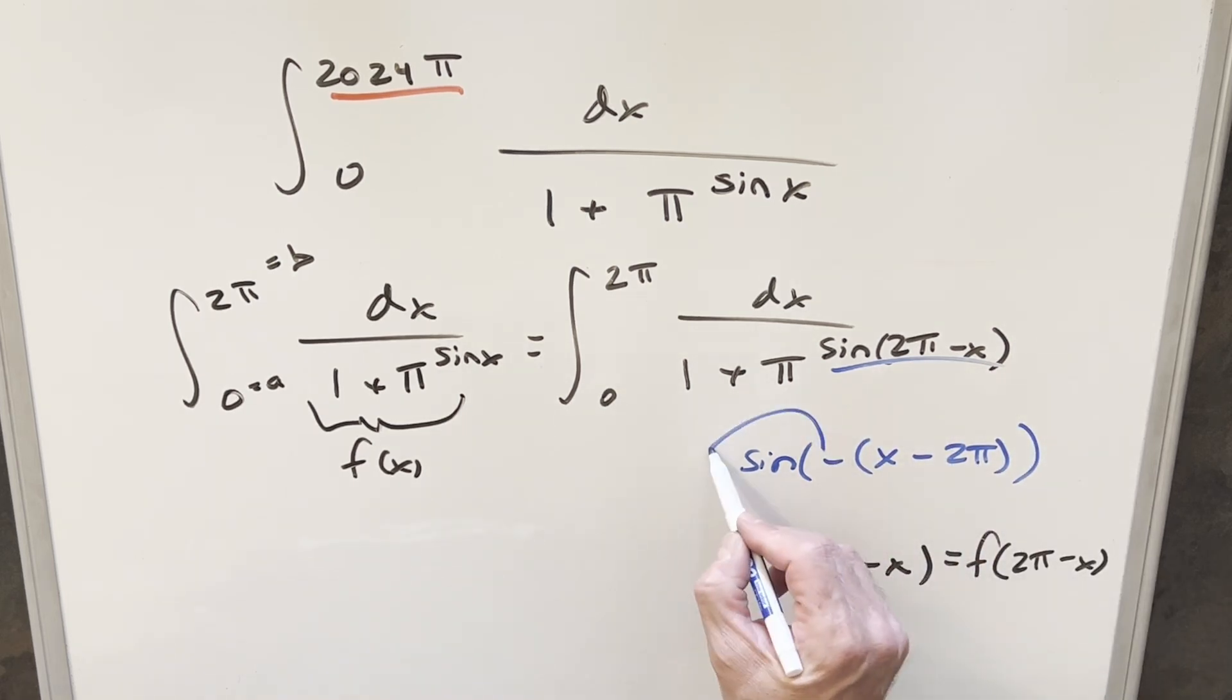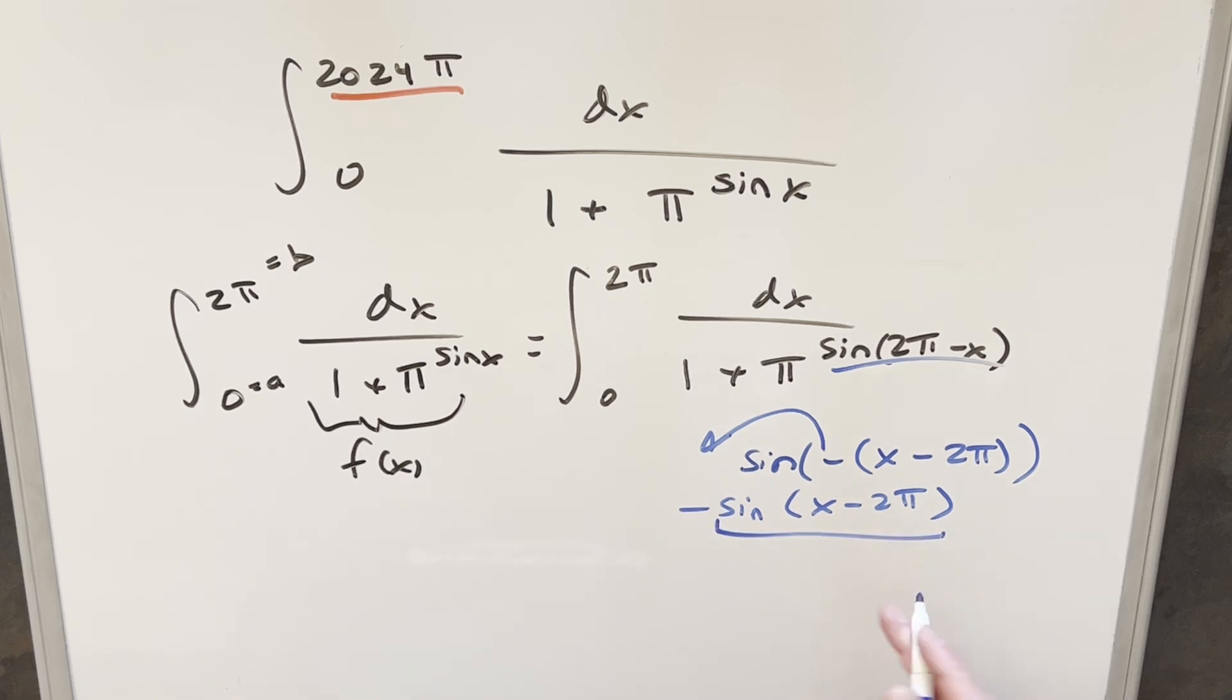Then because sine's an odd function, I can bring the minus sign out front. I can write this as minus sine x minus 2π. But now if you think of this here, it's just shifting sine by 2π. That's just going to be sine x here. And we just have this minus sign in front. So all we need to do is put a minus sine x back in here and rework this.